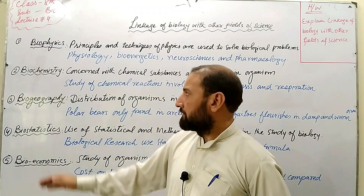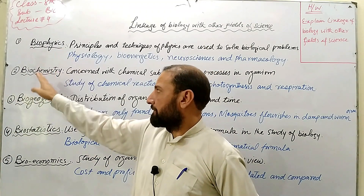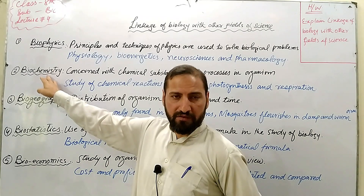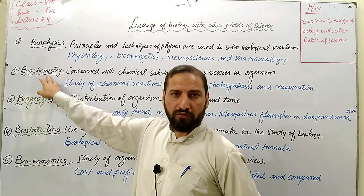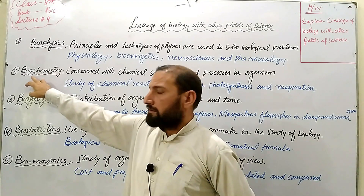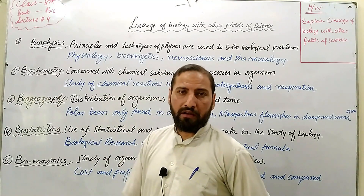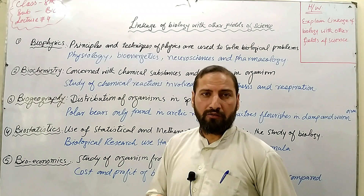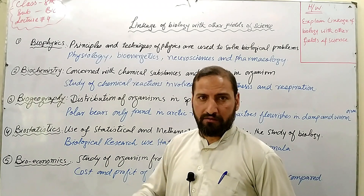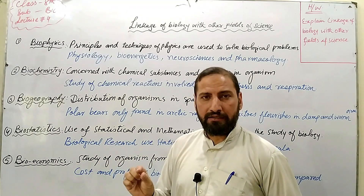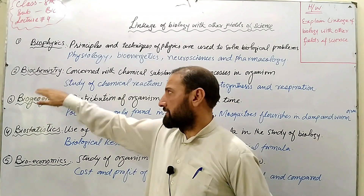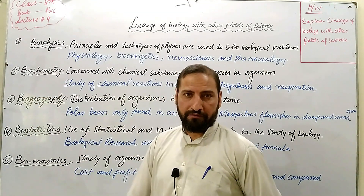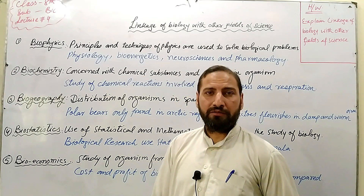The first field is physics. The second field of science is chemistry. Chemistry is also closely related with biology — when studying biological processes, we need the understanding of chemistry. This forms an interdisciplinary field of study known as biochemistry. The third one is biogeography, which is the relationship between geography and biology.